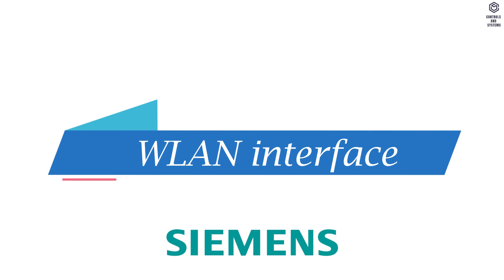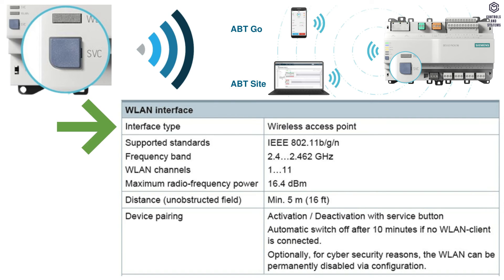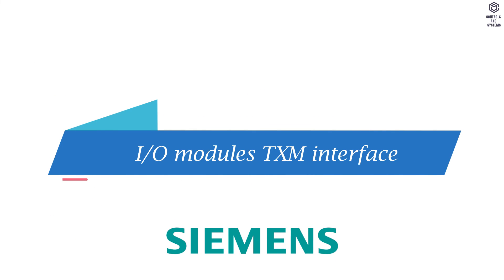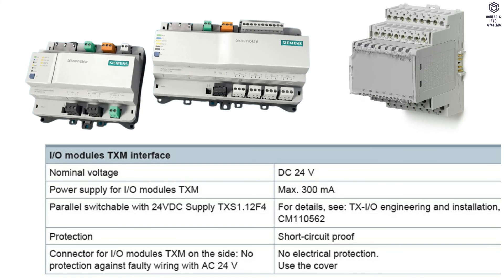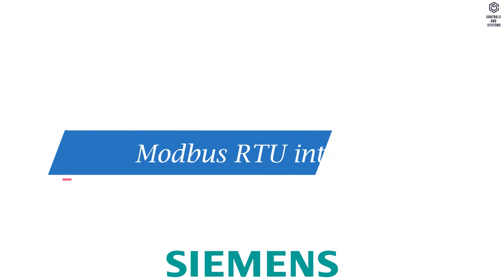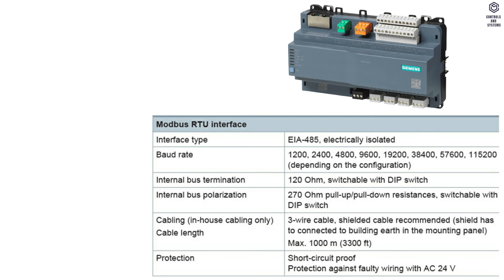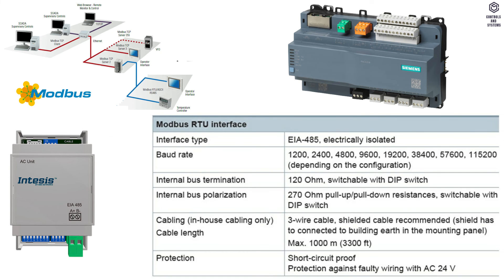WLAN Interface: this table indicates details of interface type, supported standards, frequency band, LAN channels, radio frequency, distance and device pairing. IO Modules TXM Interface: this table indicates details of voltage, power supply, protection and connector. Modbus RTU Interface (only for PXC4E16): this table indicates details of interface type, baud rate range, internal bus termination, internal bus polarization, cabling, cable length and protection.